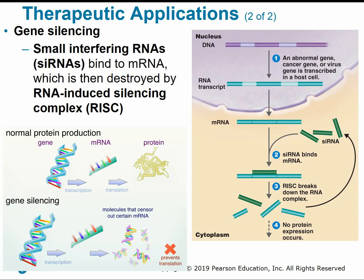Gene silencing is a natural process in eukaryotes to help defend against viruses and transposons. After transcription, small interfering RNAs (siRNAs) bind to the mRNA and prevent the ribosome from attaching and undergoing translation. They also serve as signals for the RNA-induced silencing complex (RISC) enzyme to degrade and break down the mRNA. If we destroy the mRNA, no protein expression can occur.